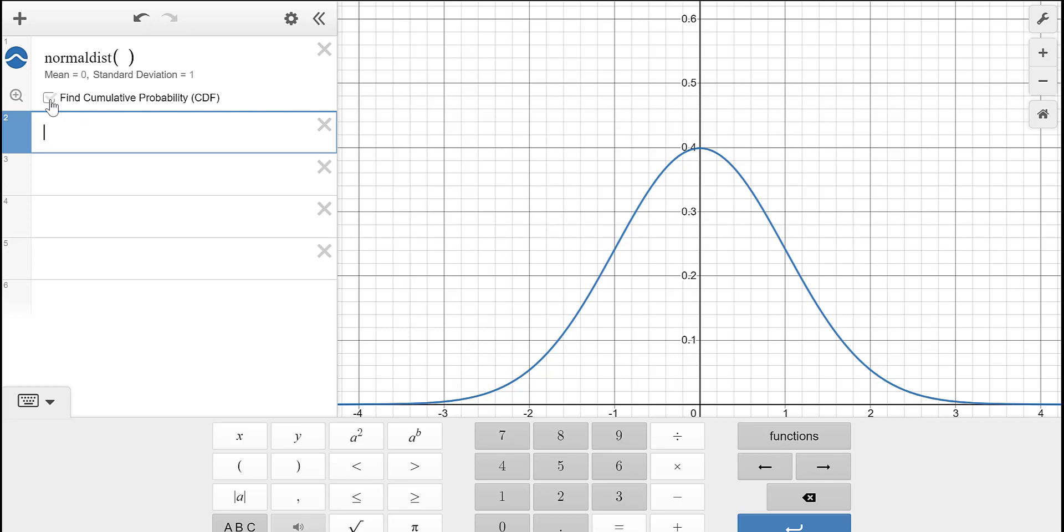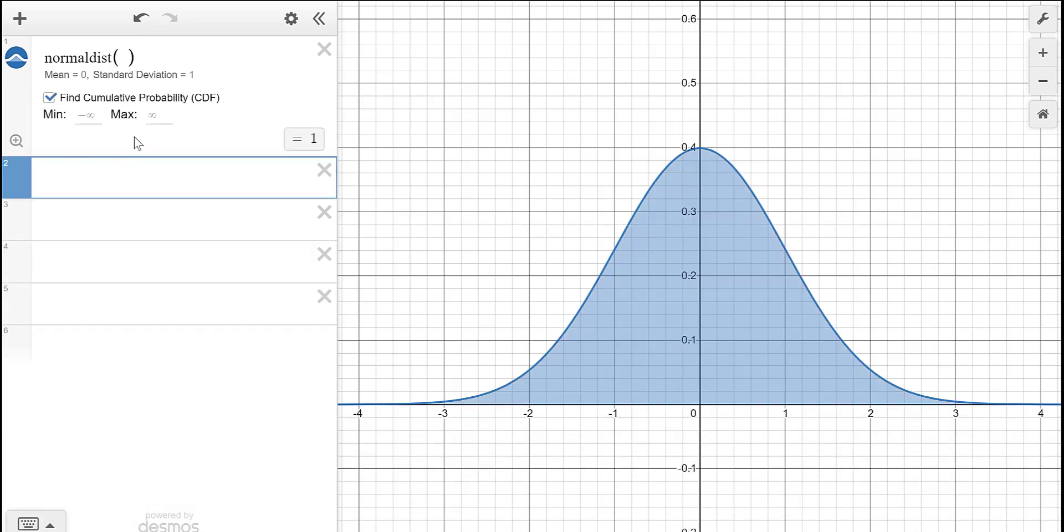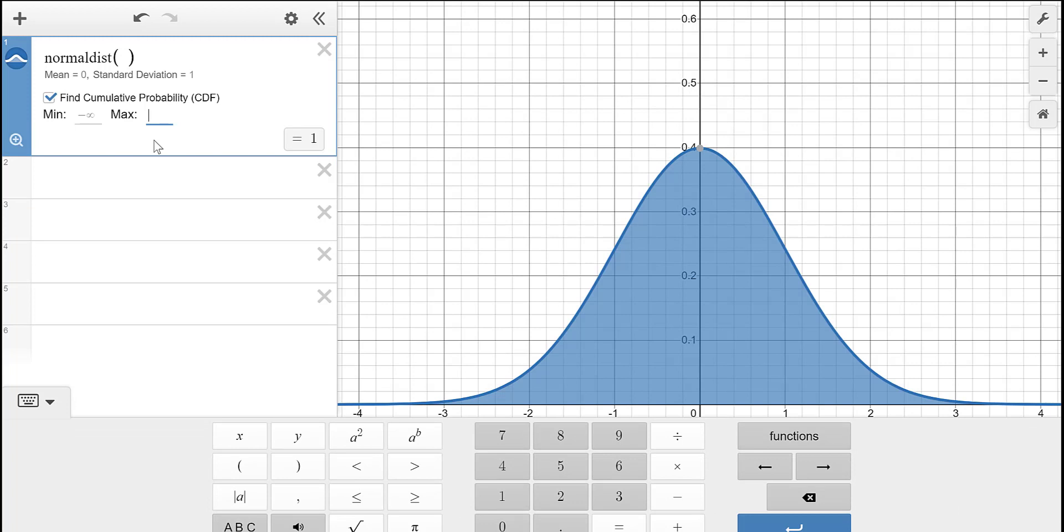It comes up by default negative infinity to infinity, and then you can pick what you want it to go to, like say we want to go from negative one to one, because we know that should be around 68%.